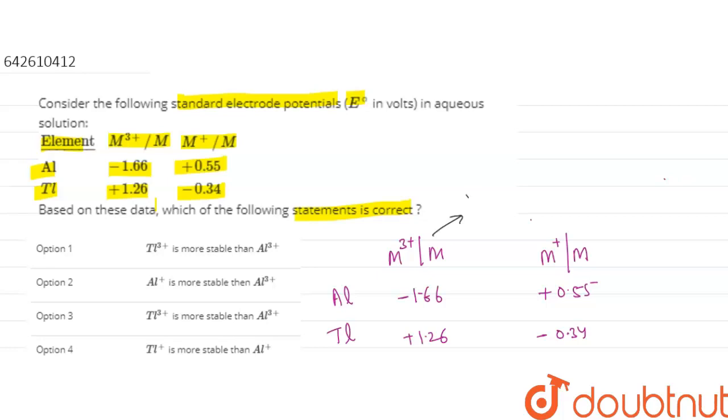then it will be the reduction potential, or we can say when an element gains an electron, then it will be the reduction potential.